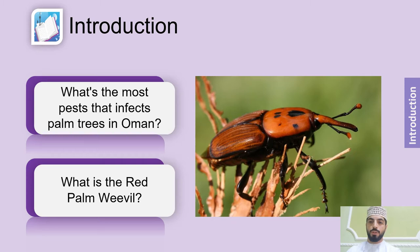We begin with this question: what is the most dangerous pest that infects palm trees in Oman? It is the red palm weevil insect, as shown in this figure. Red palm weevil is a type of insect which is considered one of the most dangerous insects that attack palm trees in many countries, including Oman.